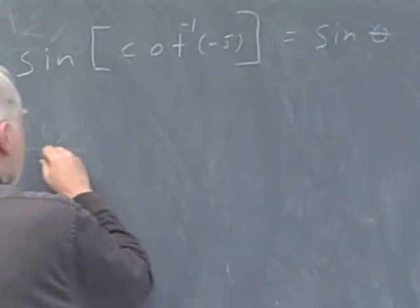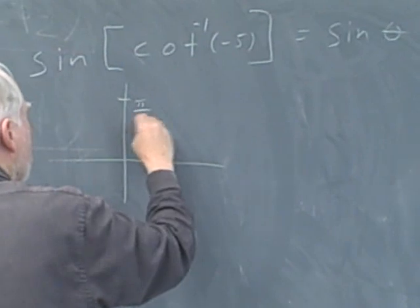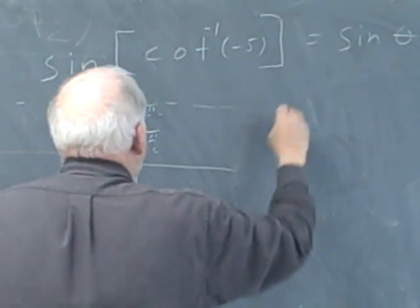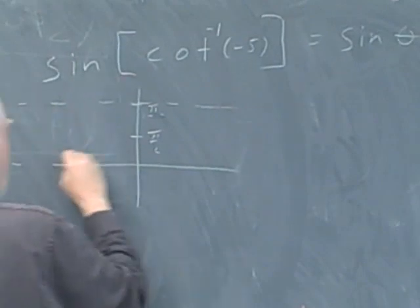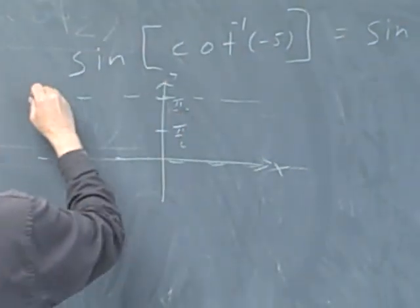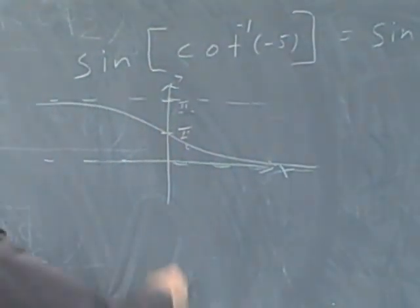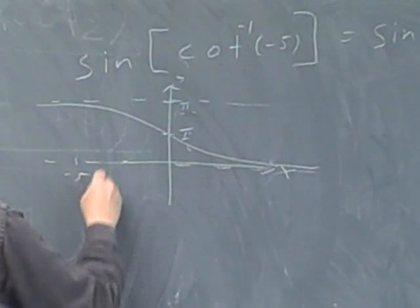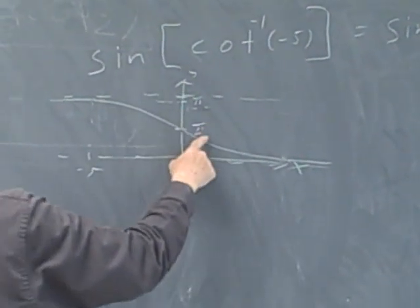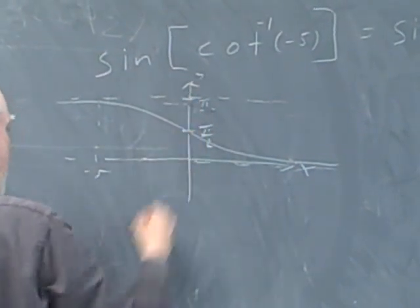One thing we know about theta, if you look at the graph of, and I'll quickly draw it, of the cotangent inverse, horizontal asymptote here, right? And you should learn all these graphs. My students do. And if I look at negative 5, I go out here. I go up here. Here's my point.